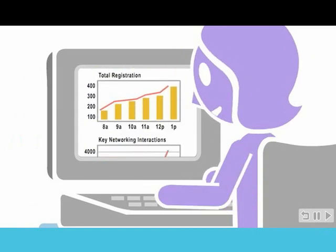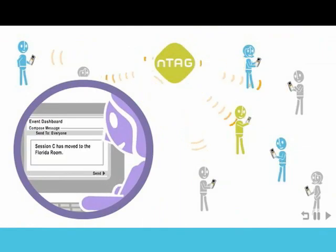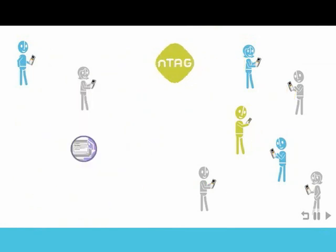Event planners can monitor conference data in real time, allowing them to make adjustments and automatically notify attendees about things like room changes.